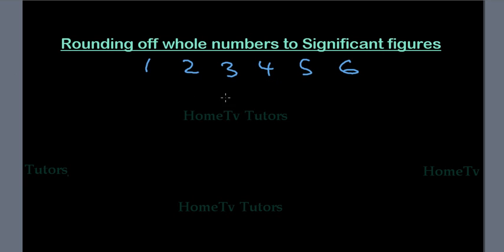Let's take for instance the whole number 86621 to be rounded off to 1 significant figure. So we count from the left: 1.